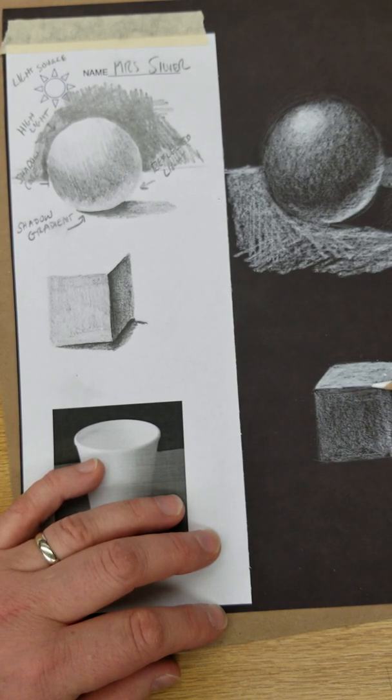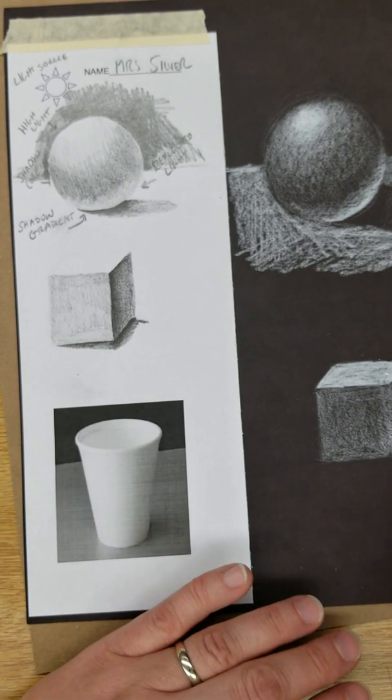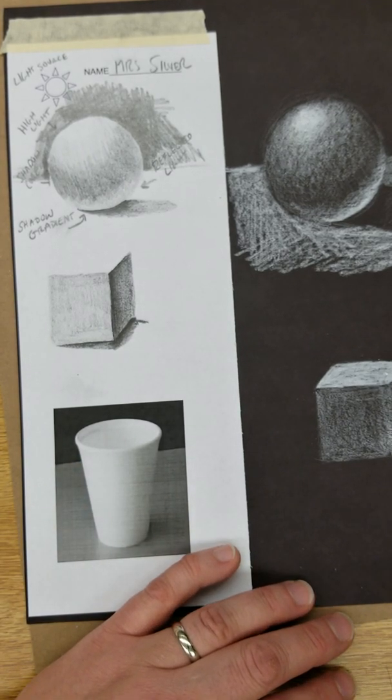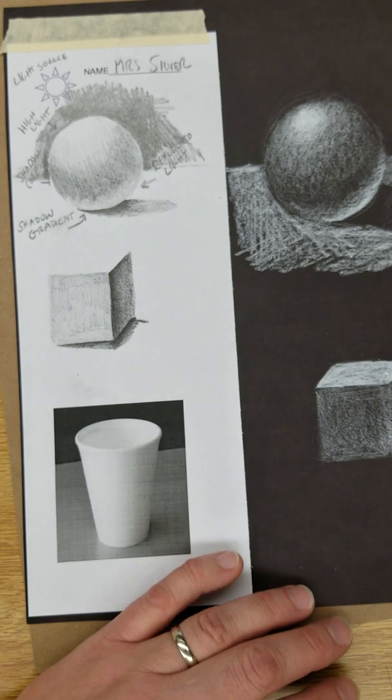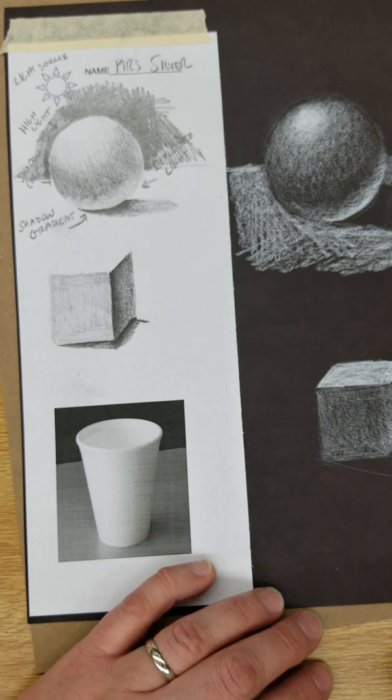And then finally, do this bottom part down here. Maybe it's just going to have a very light kind of, super light. There we go. Like that, right? And then this is going to come out. There's my shadow. Something like that.